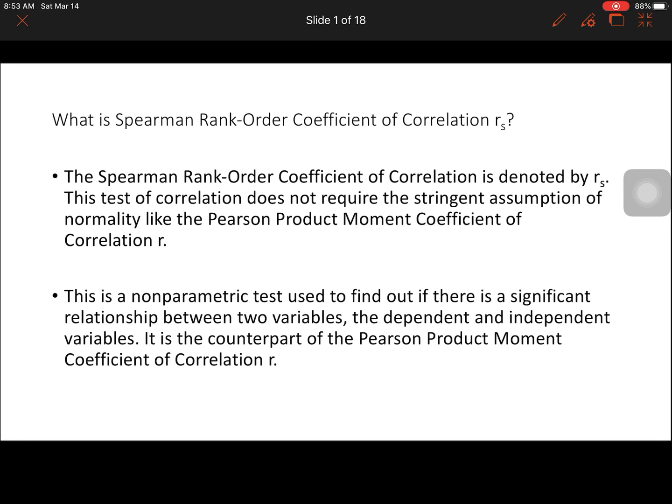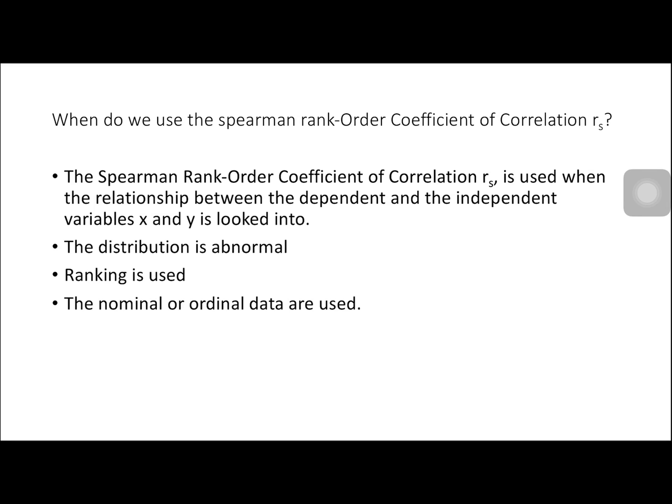RS is the counterpart of the Pearson Product Moment Coefficient of Correlation R. We use it when the relationship between the dependent and independent variables X and Y is looked into, and our distribution is not normal.